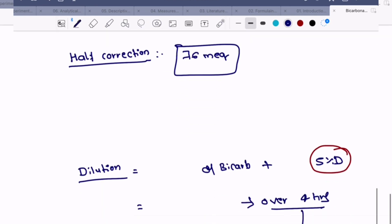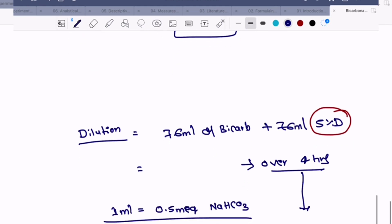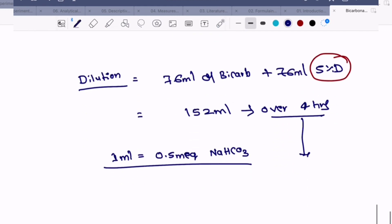This has to be given over 4 hours and has to be diluted with 5% dextrose. Dilution should be done with equal amounts: 76 ml of bicarb plus 76 ml of 5% dextrose given over 4 hours. Total is 152 ml.